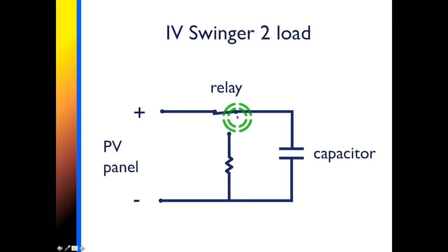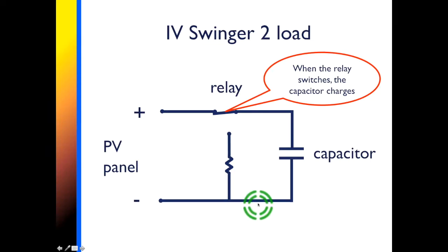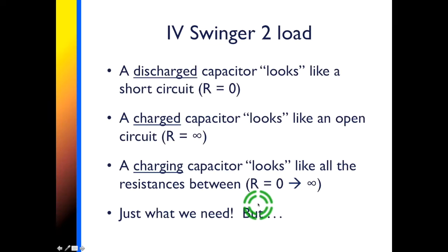The controller switches the relay to connect the solar panel across the capacitor which charges it up. The way this works is that a discharged capacitor looks like a short circuit, looks like zero resistance. And a fully charged capacitor looks like an open circuit, in other words like infinite resistance.